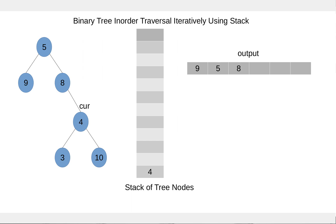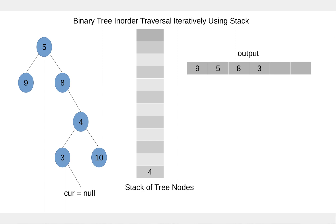Node 4 is not null, we add it to the stack. Again move to the left child. Node 3 is not null so we'll add it to the stack. Move to the left child — the left child of 3 is null — so we'll pop the node from the stack, process this node, and move to the right child.